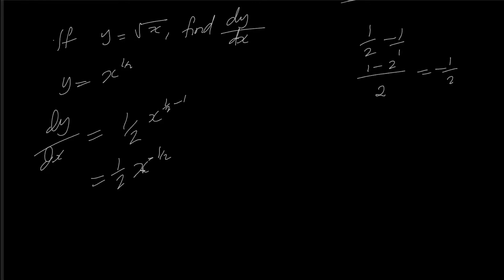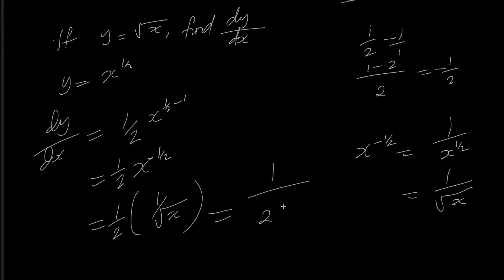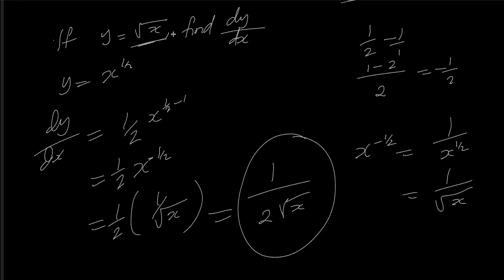So minus 1/2 means 1 over x to the power 1/2, which equals 1 over the square root of x. Therefore dy/dx equals 1 over 2 times the square root of x. This is the derivative.